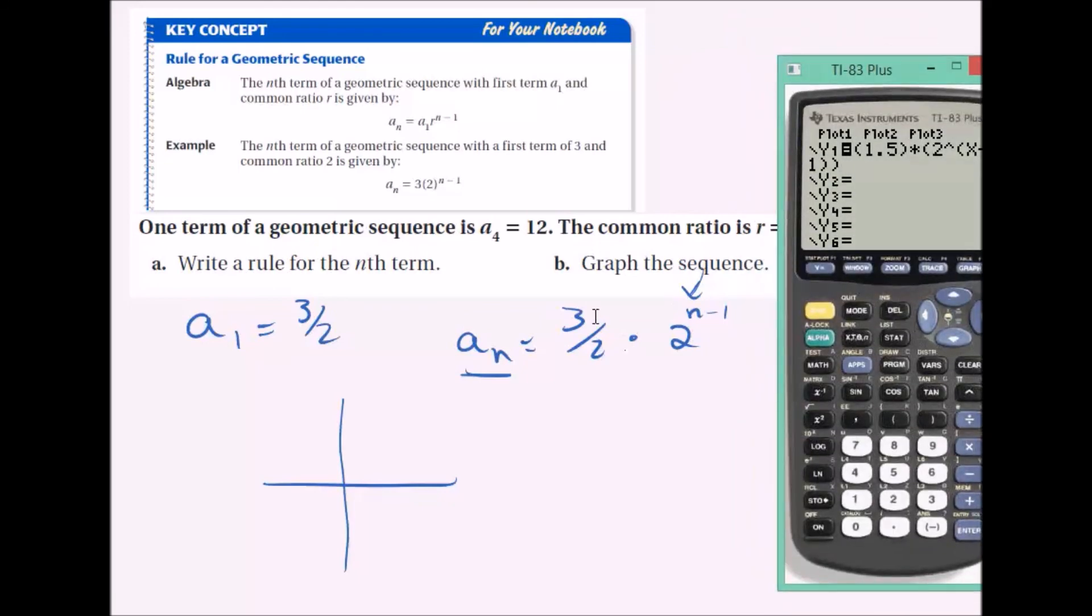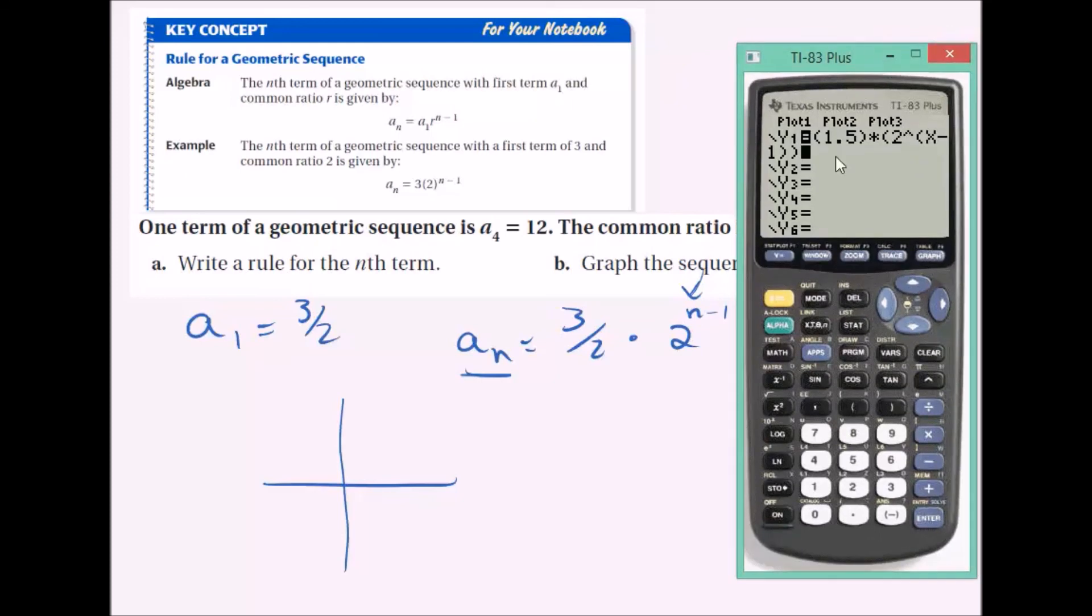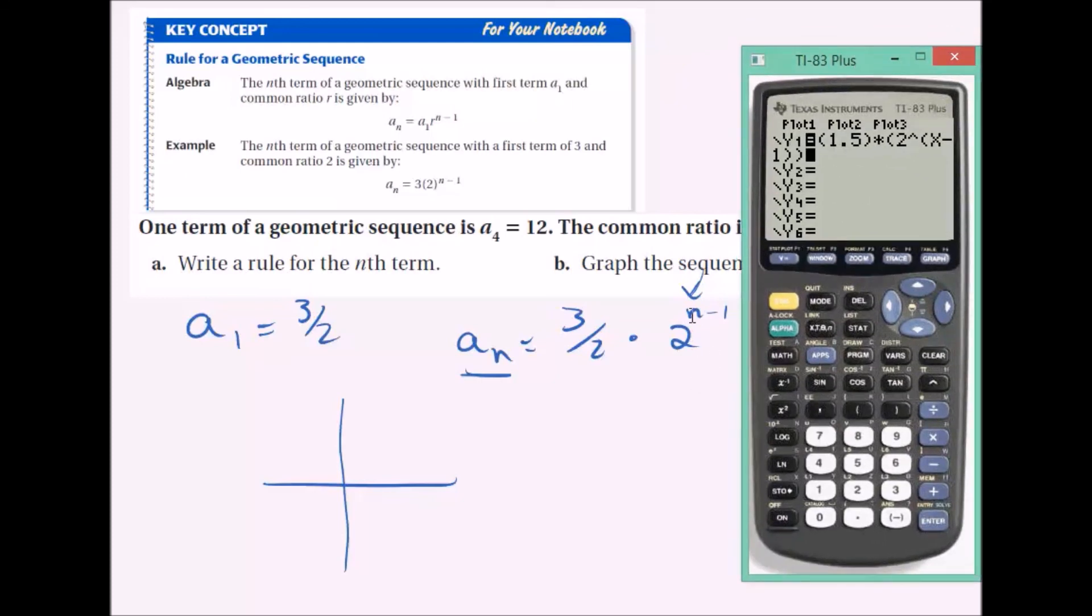You have to be very careful here because you really want to have that 3 halves in front times 2 to the n minus 1. 2 to the n minus 1 is its own term. So the way I did that is I put the whole thing in parentheses 2 to the n minus 1. And that n minus 1 needs to go in parentheses as well. Or else you're not typing 2 to the n minus 1. You're typing 2 to the n and then minus 1. Graph it. Check out the table.